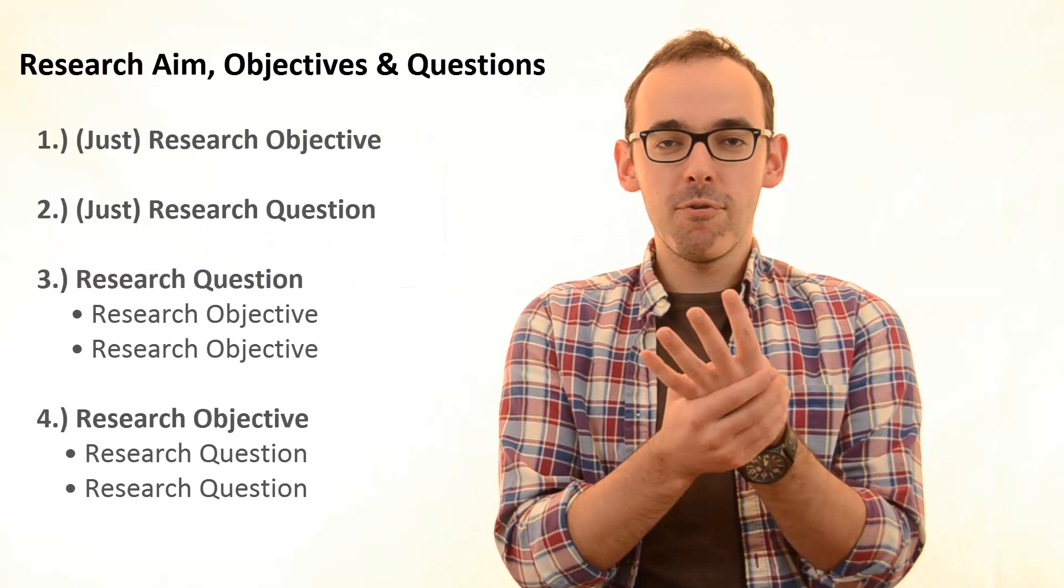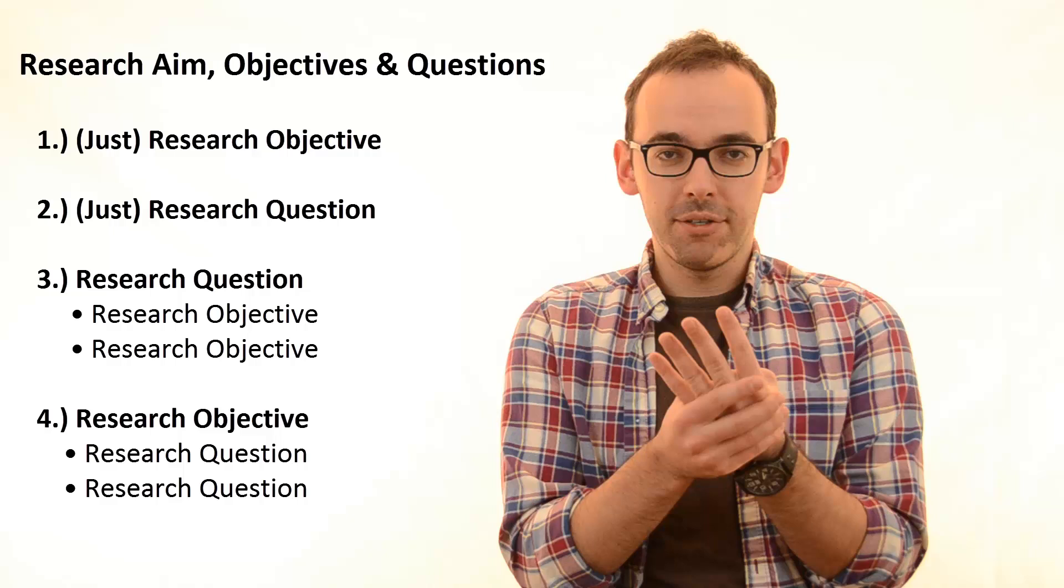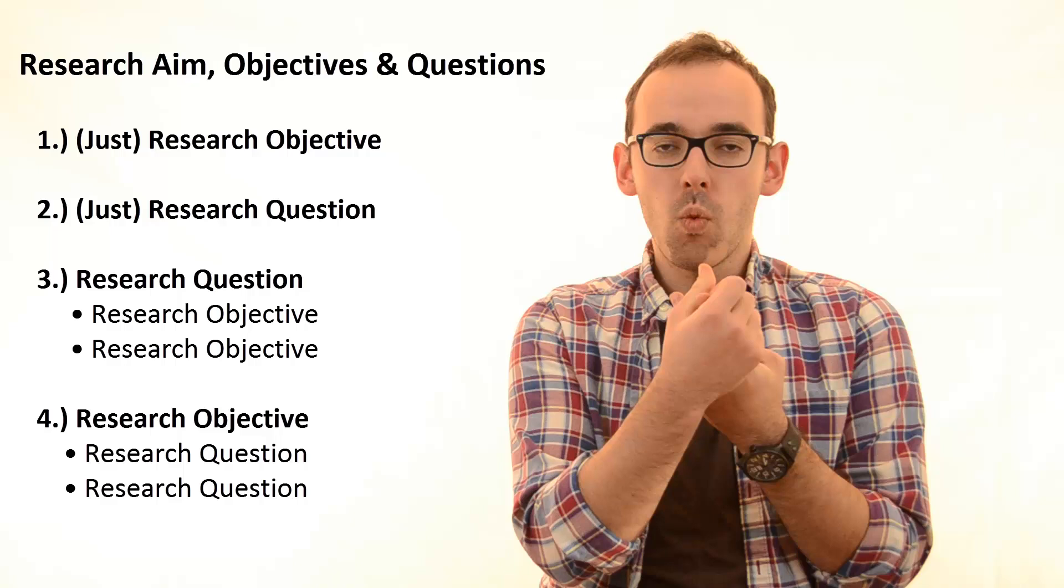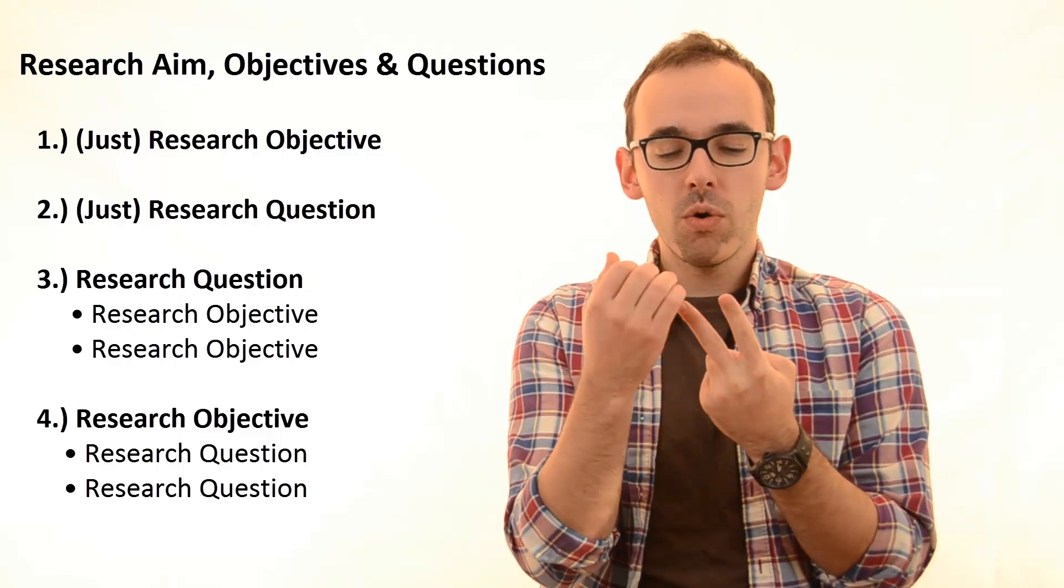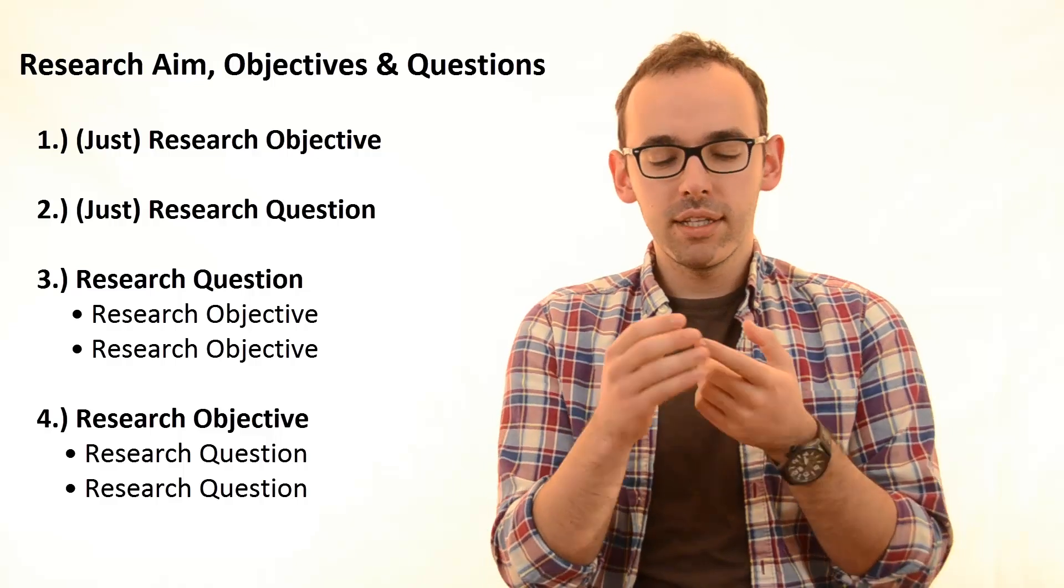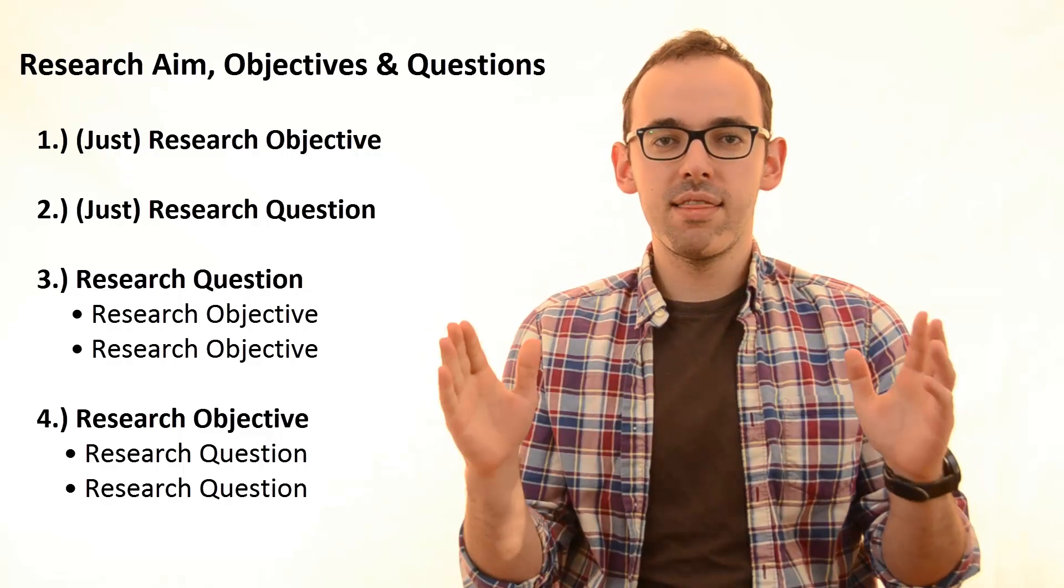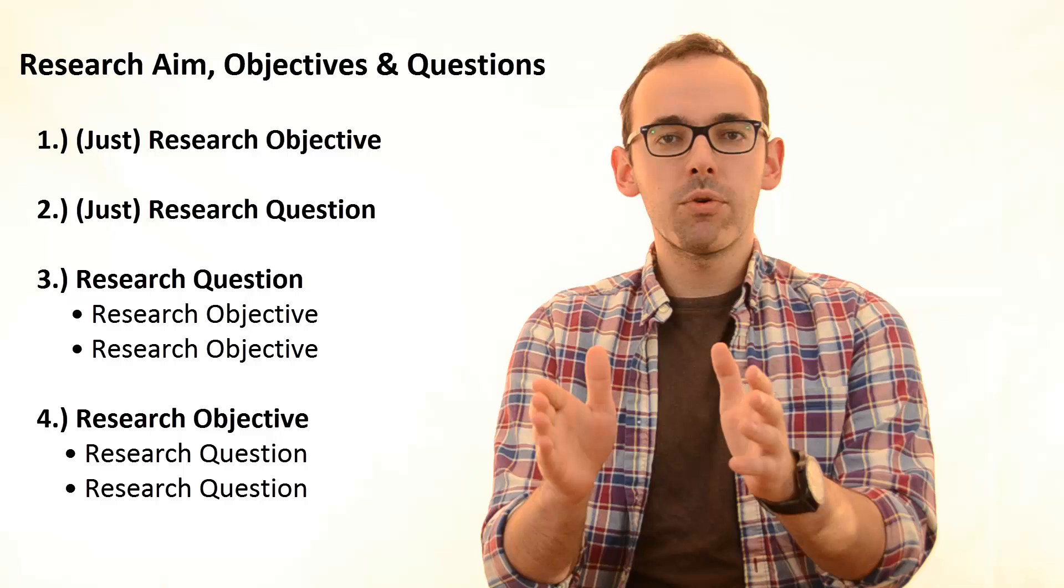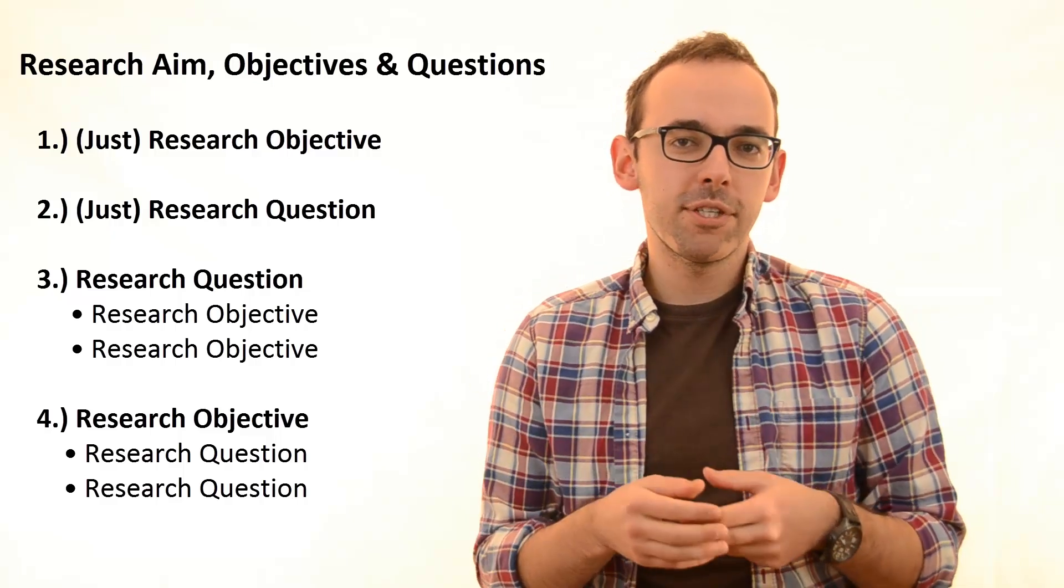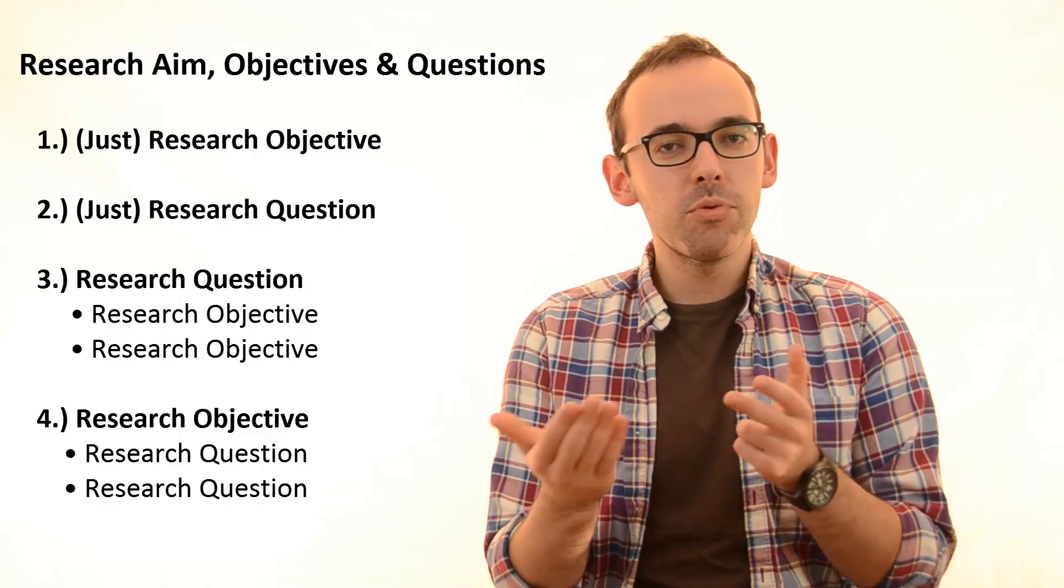There are basically four different ways that you can go. First two are quite simple. You will have one research objective or one research question, and that's all. The objective will be simply a sentence saying where your research is going. The question will say the same thing, just stated as a question. So these two are the same thing.